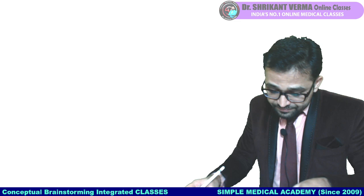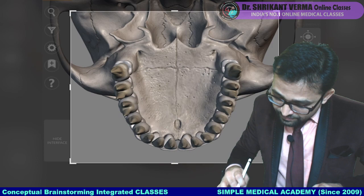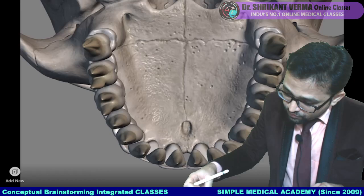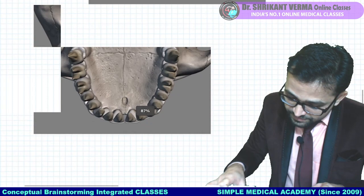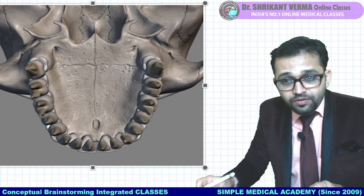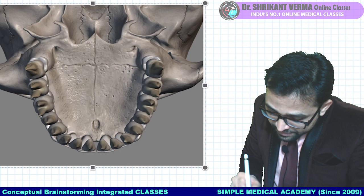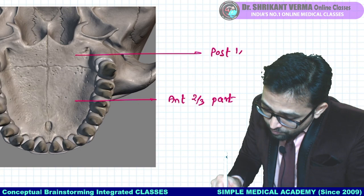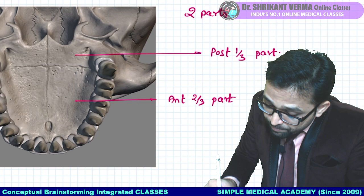Try to understand with three-dimensional orientation. You can see — this is the total bone, so definitely it is the osteology part. Here you can observe our hard palate, which is having the anterior two-thirds part and posterior one-third part. These are our two different parts of the hard palate. Hard palate's two parts: one — anterior two-thirds, two — posterior one-third.